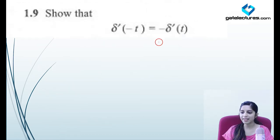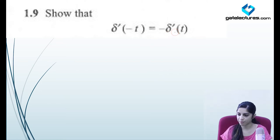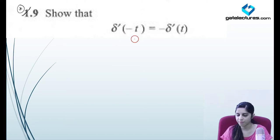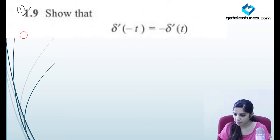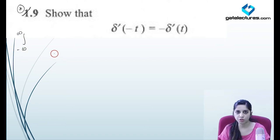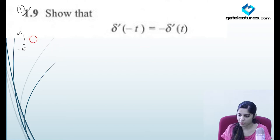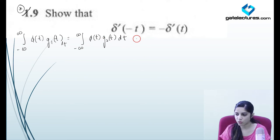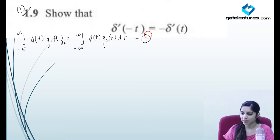Now look at the next question. They're asking you to show that δ'(−t) = −δ'(t). This is a tricky and important question — remember this property and its derivation. We use the same equivalence definition: for two generalized functions g₁(t) and g₂(t) to be equal, ∫₋∞^∞ φ(t)·g₁(t) dt must equal ∫₋∞^∞ φ(t)·g₂(t) dt.